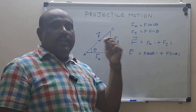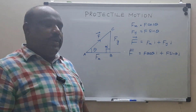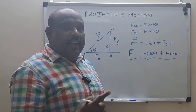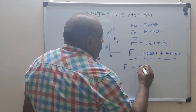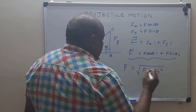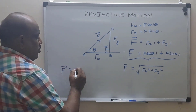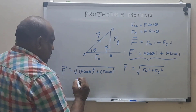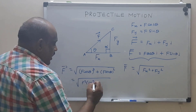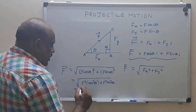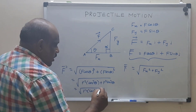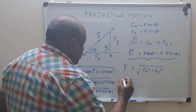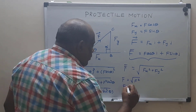For the resultant magnitude, F equals the square root of Fx squared plus Fy squared. Substituting: square root of (F cos theta)² + (F sin theta)² = square root of F²(cos²theta + sin²theta). Since cos²theta + sin²theta = 1, the square root of F² is simply F. This confirms our result is correct — the horizontal component is F cos theta and the vertical component is F sin theta.